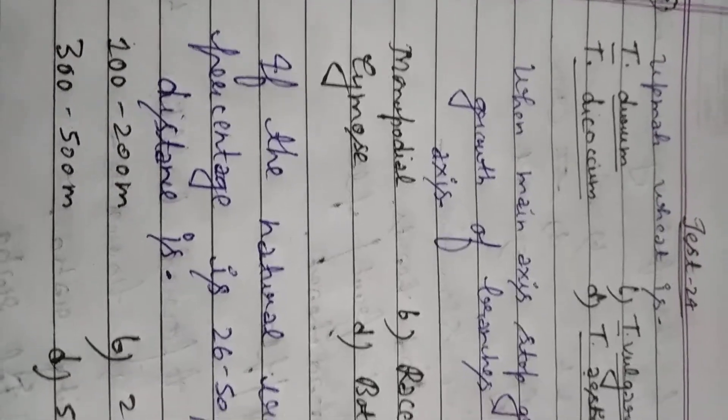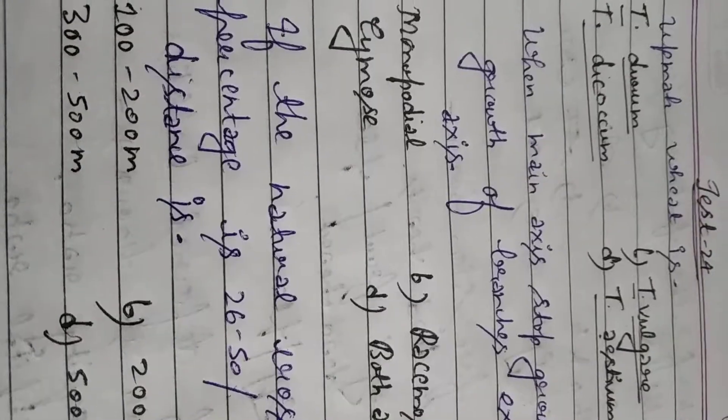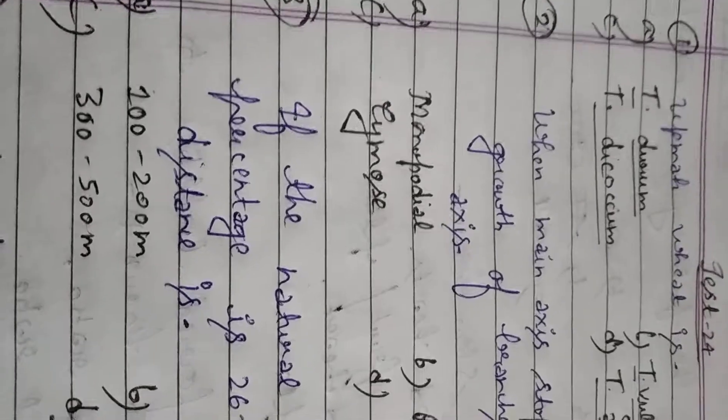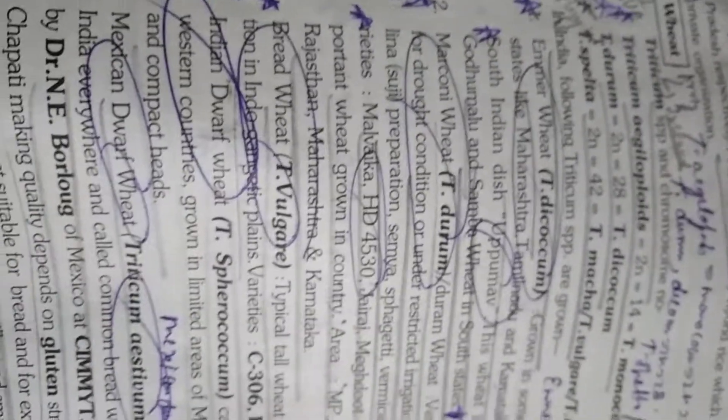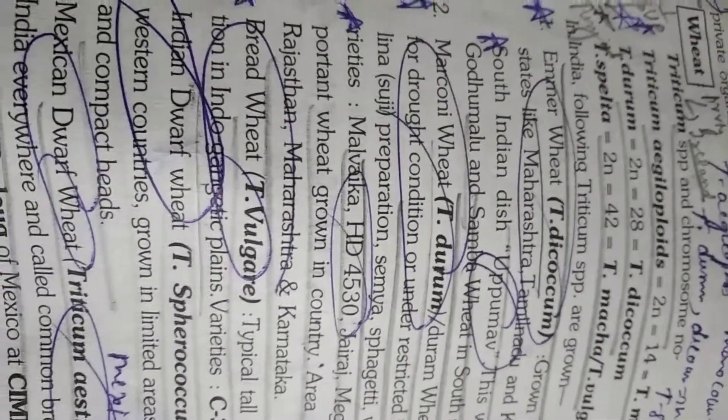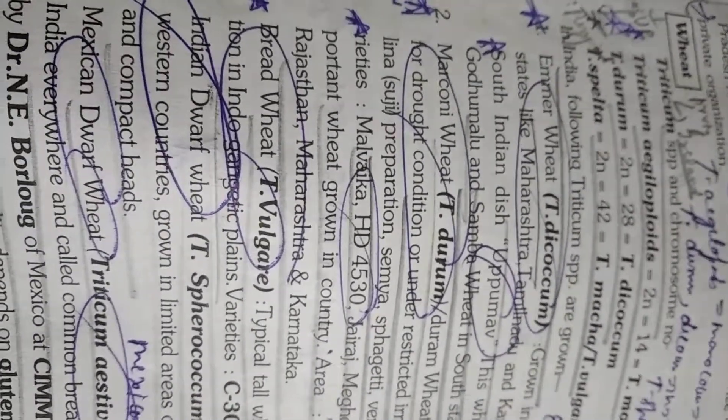Please students write down the numbers 1 to 10 and then evaluate your correct answer at the end of the test for self evaluation. Let's start. Question number 1. Upma wheat is option A Triticum durum, option B Triticum vulgare, option C Triticum dicoccum, option D Triticum aestivum. Students this is a very basic question. Upma wheat is Triticum dicoccum. It is also called Emmer wheat.